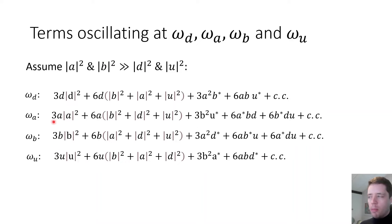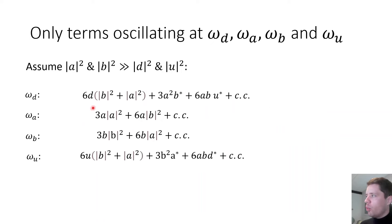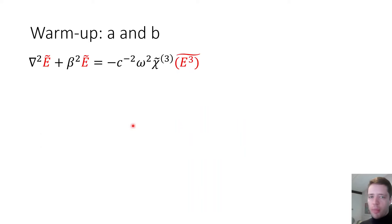We further simplify by assuming the power of fields A and B is much greater than the power of fields D and U — essentially treating A and B as strong pumps delivering power to D and U without being significantly affected themselves.